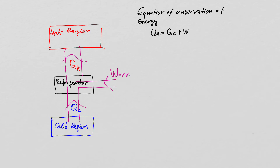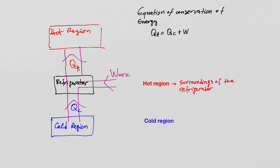A good question now is: what exactly is the hot region for a refrigerator? The hot region for a refrigerator is simply the surroundings of the refrigerator. So if you have a refrigerator in your kitchen, then the surroundings would be the kitchen, the house, and ultimately the entire earth. The cold region is the inside of the refrigerator. So heat is removed from the cold inside of the refrigerator by doing work, and it is released into the surroundings of the refrigerator.